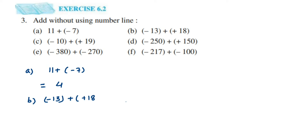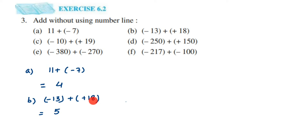The next one is minus 13 plus plus 18. We have negative and positive — two different signs — so subtract: 18 minus 13 gives us 5. Which number is greater, 13 or 18? Eighteen is greater and the sign of 18 is plus, so the answer is plus 5, or simply 5.